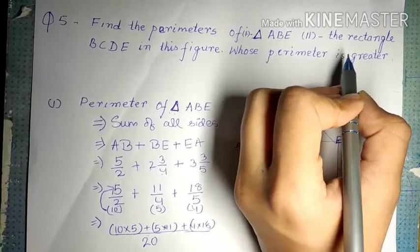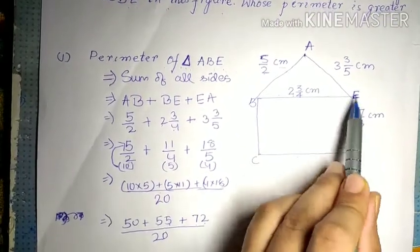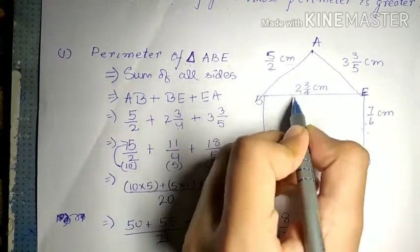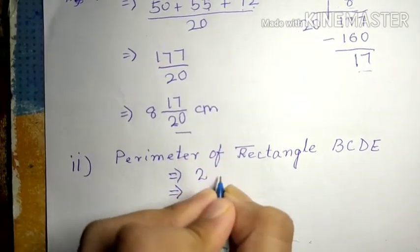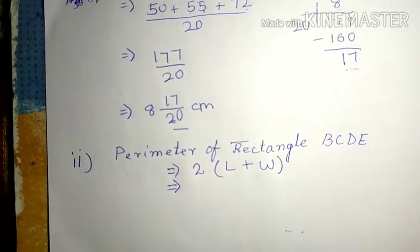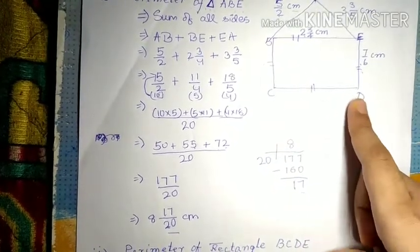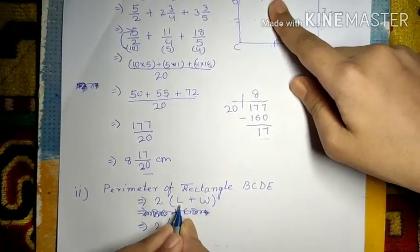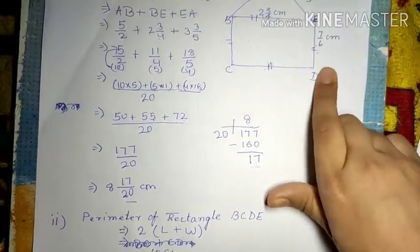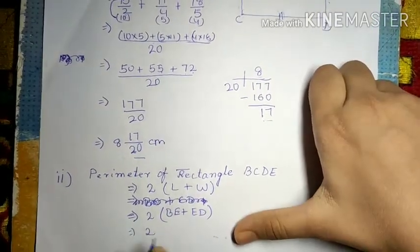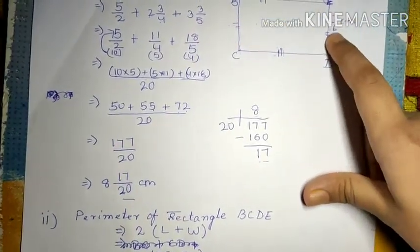The second part of question 5 is to find the perimeter of rectangle BCDE. The formula for the perimeter of a rectangle is 2 × (length + width). The length is BE and the width is ED. BE is 2¾ and ED is 7/6. So we have 2 × (2¾ + 7/6).